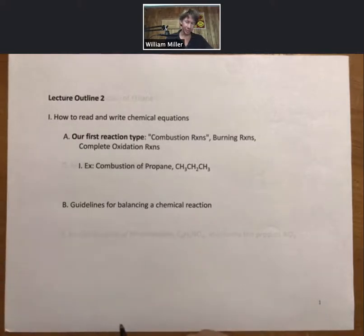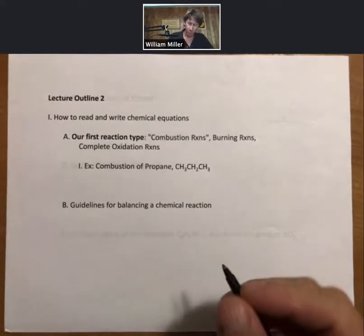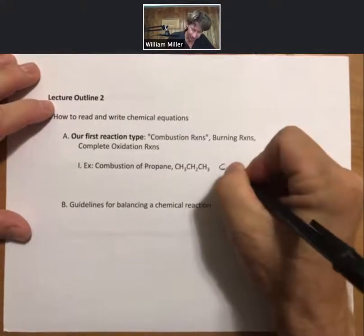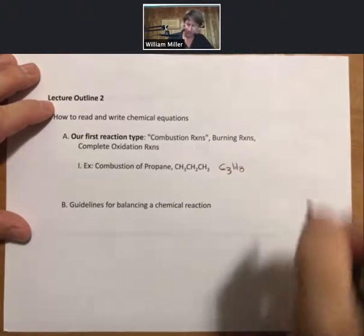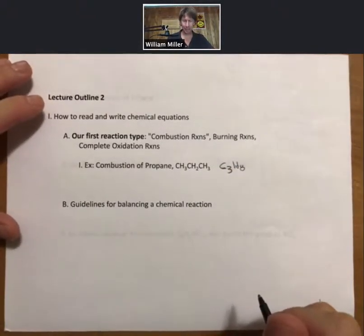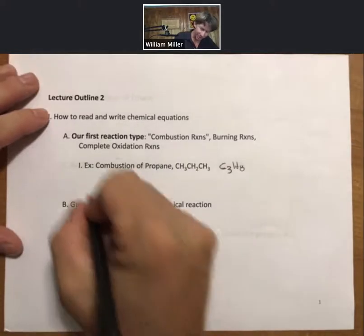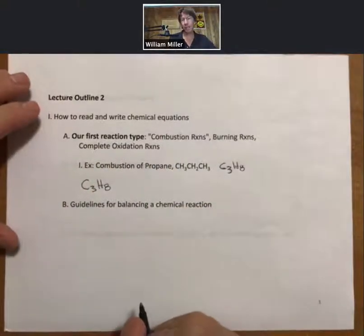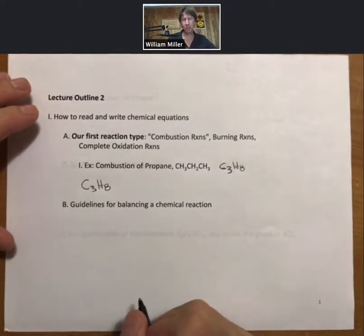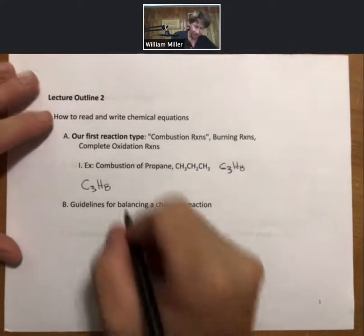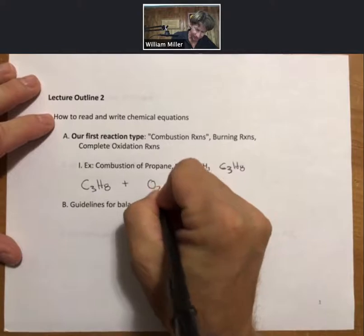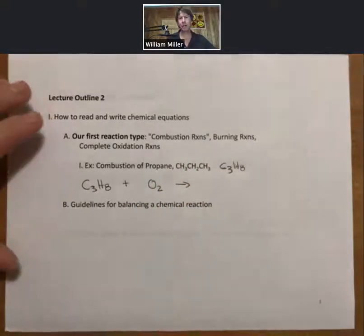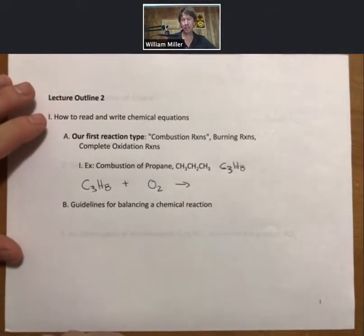I'll do my first example with the combustion of propane, propane CH3, CH2, CH3. We're going to abbreviate that as C3H8, and then when I write this reaction for any combustion, burning reaction, or complete oxidation reaction, you're going to add oxygen and the products will be carbon dioxide and H2O.